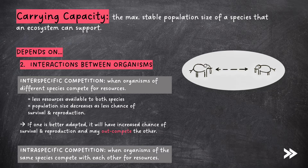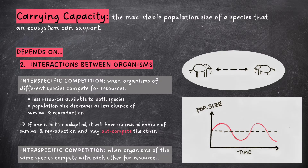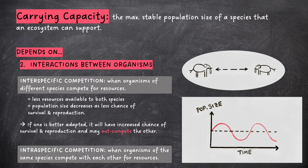Intraspecific competition is when organisms of the same species compete with each other for resources. Looking at the graph, population size can vary due to intraspecific competition. At first we have a large population; however, a larger population means increased demand for food, meaning increased intraspecific competition. There is less food available to each individual, so each individual has a lower chance of surviving and reproducing, and the population size decreases. As population size decreases, more food becomes available to each individual, increasing the chance of survival and reproduction, so the population size increases again, and the cycle repeats.